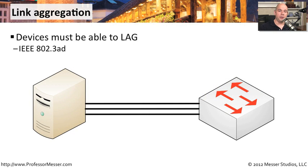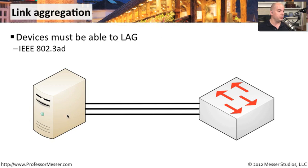A key piece of link aggregation is that both devices on each side of that connection have to understand that they will be doing link aggregation or LAG. There is a standard for link aggregation called 802.3AD, and if you check your manufacturer's requirements, you'll see a mention of link aggregation or 802.3AD. Many devices are now able to communicate this way. You might be using this on a single server to get much more bandwidth, or you may be plugging in different network infrastructure components, maybe connecting two switches to each other using link aggregation.